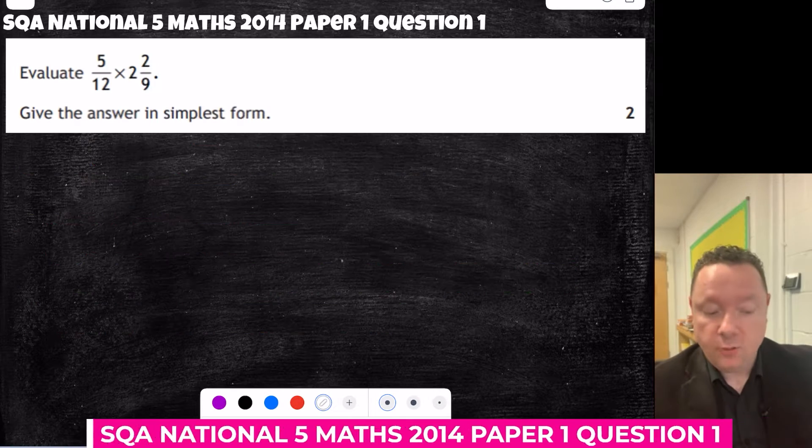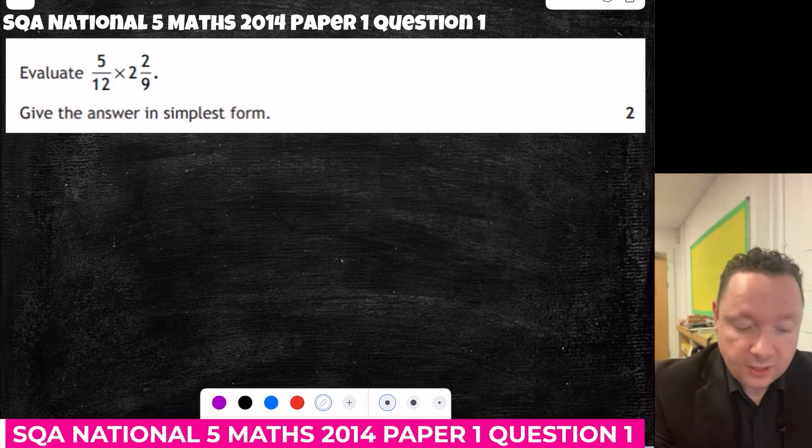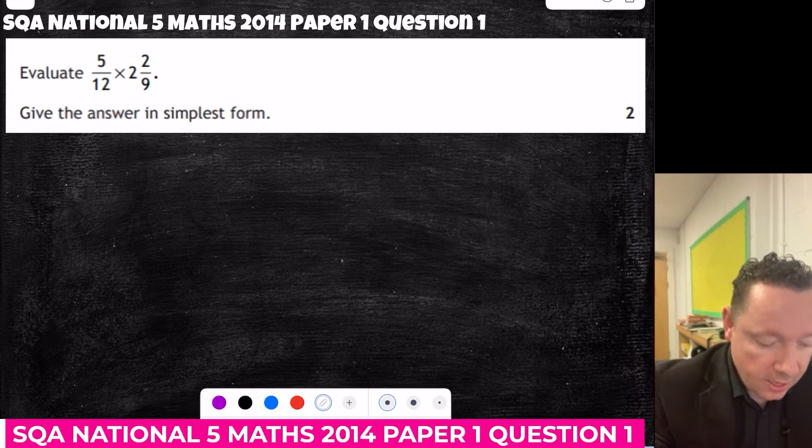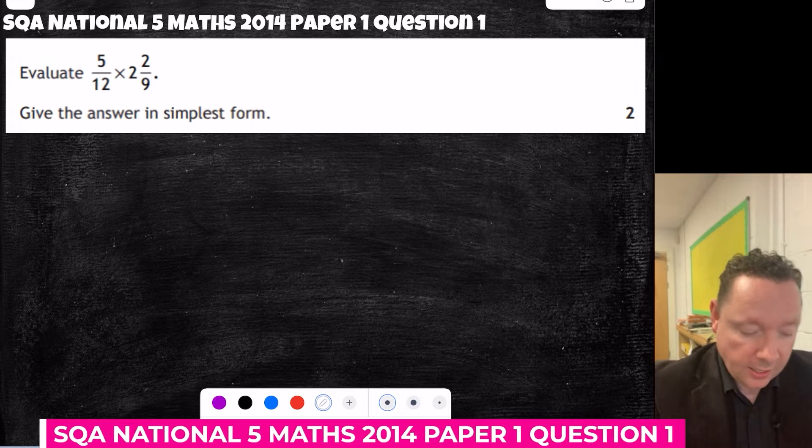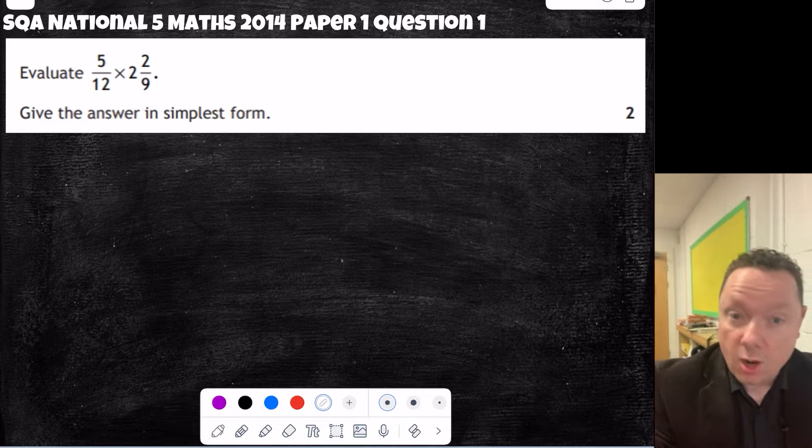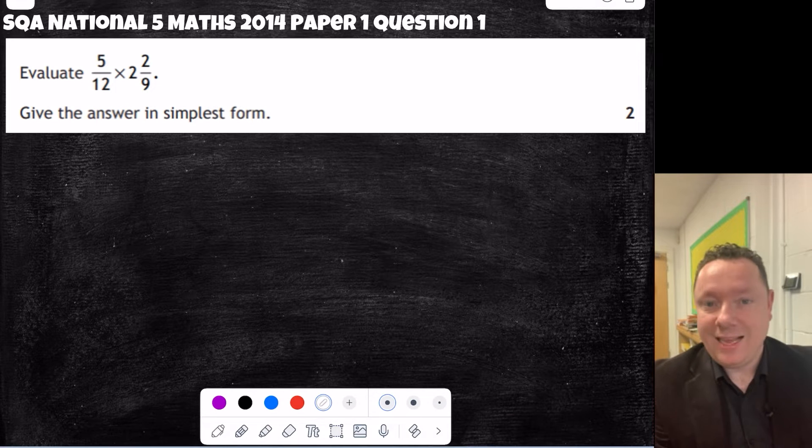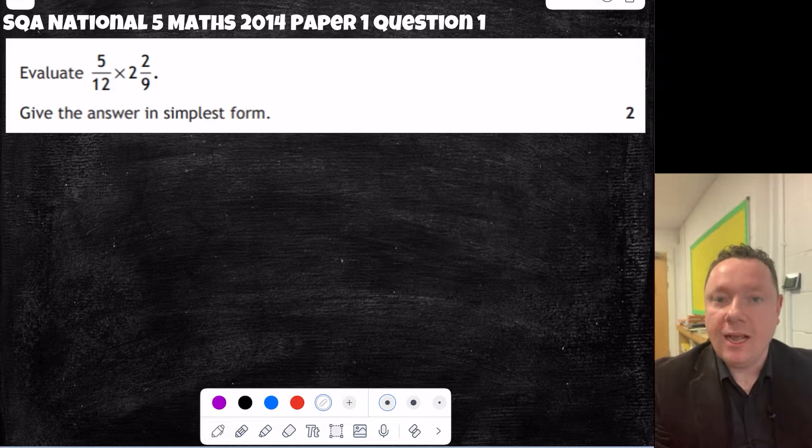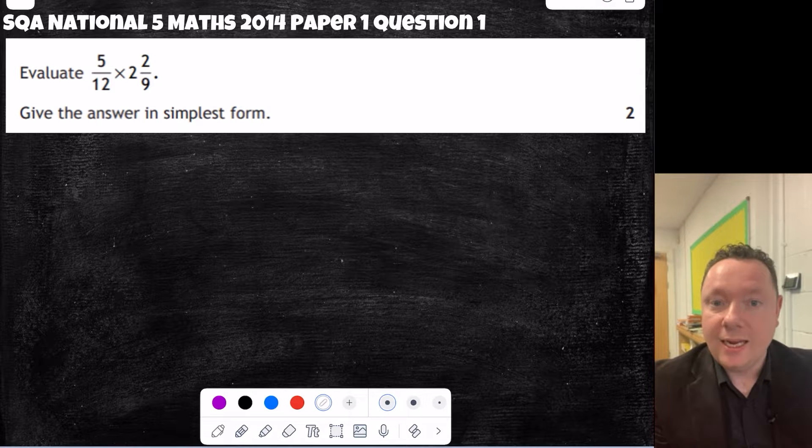In SQA National 5 maths, 2014, paper 1, question 1 said, evaluate 5 over 12 times 2 and 2 ninths. So I've got to multiply fractions, but I've got a mixed number.